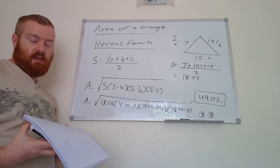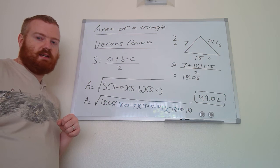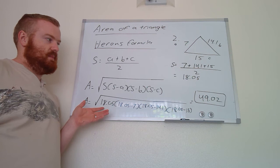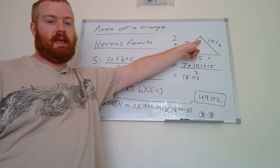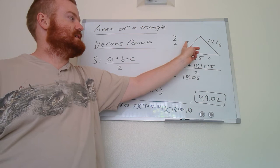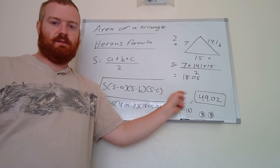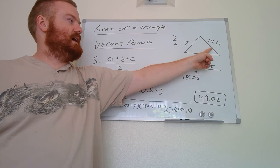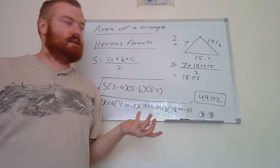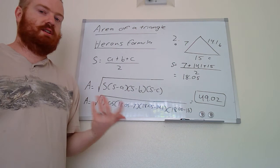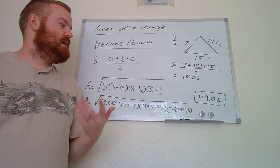There are other ways to compute area when you have all three side lengths. Using the law of cosines, you could calculate one of the angle measurements — it doesn't matter which one — and then use the first area formula. For example, if you calculate angle C, you'd do one-half times 7 times 14.1 times sine of that angle. Or angle A: one-half times 15 times 14.1 times sine of angle A. Or angle B: one-half times 7 times 15 times sine of angle B. All approaches give 49.02. Heron's formula just lets you do it in one step.